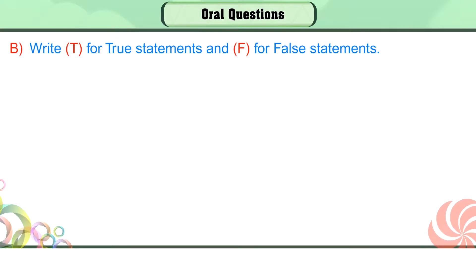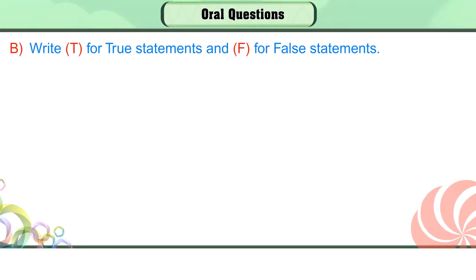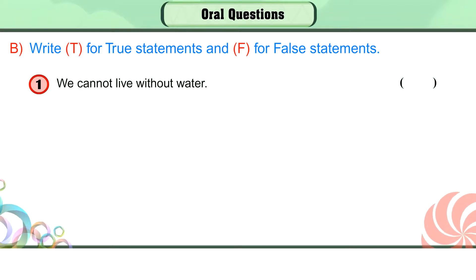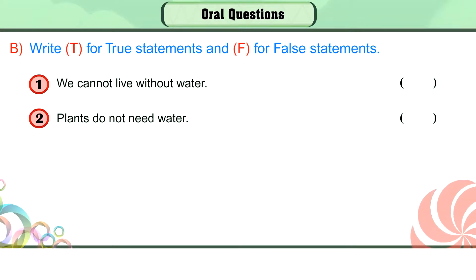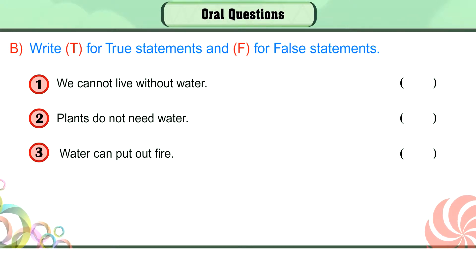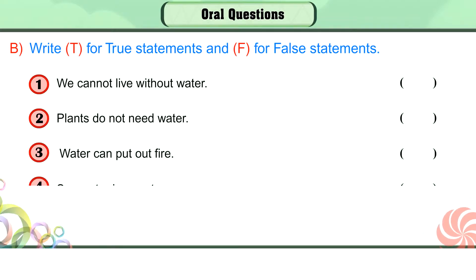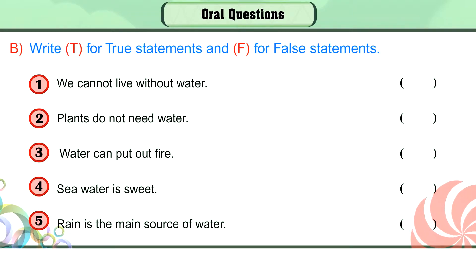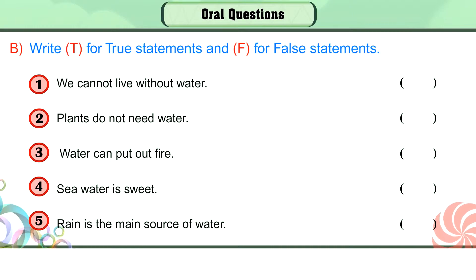Oral questions. B. Write T for true statements and F for false statements. 1. We cannot live without water. 2. Plants do not need water. 3. Water can put out fire. 4. Seawater is sweet. 5. Rain is the main source of water.